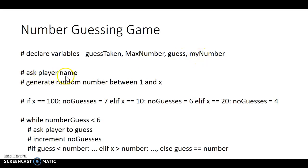OK, so I'm asking the player their name. I'm going to generate a random number there between 1 and X or max number, whatever that is. I'm going to have an if statement here.